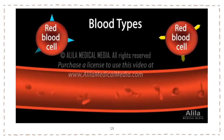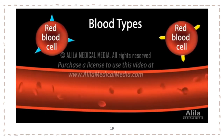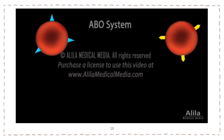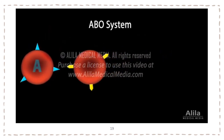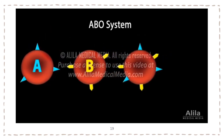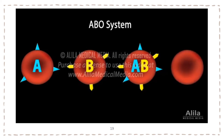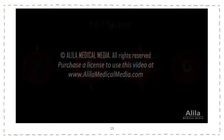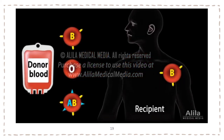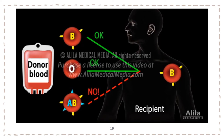Blood type refers to the presence or absence of a certain marker or antigen on the surface of a person's red blood cells. In the ABO system, presence of A or B antigen gives type A or B; presence of both antigens gives type AB, while their absence gives type O. Blood typing is critical for blood transfusion as there are very specific ways in which blood types must be matched between donor and recipient. The rule is simple: patients should not be given antigens that their own blood does not have.